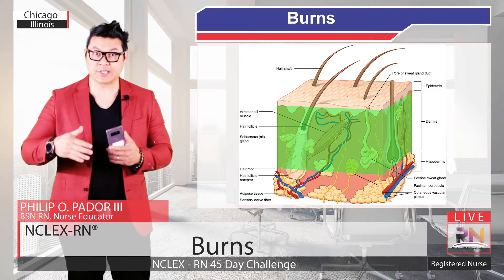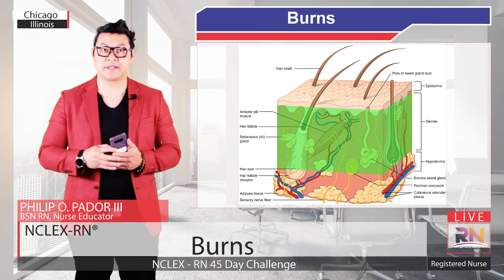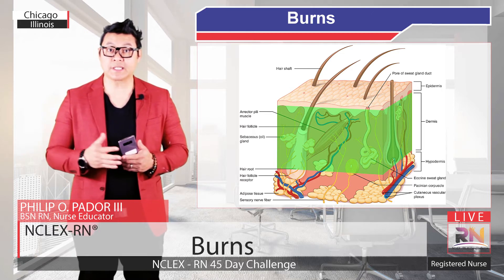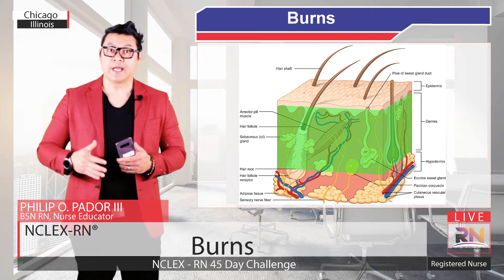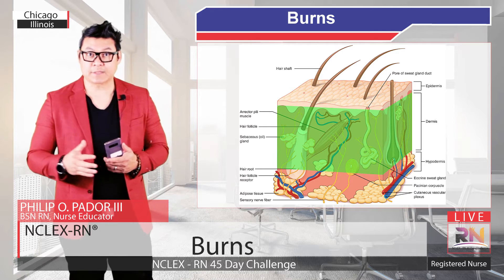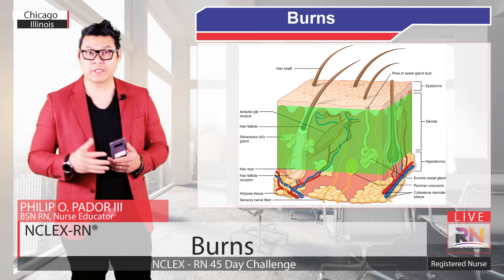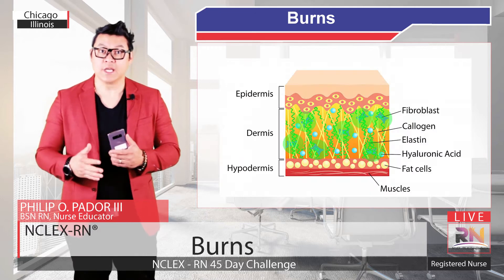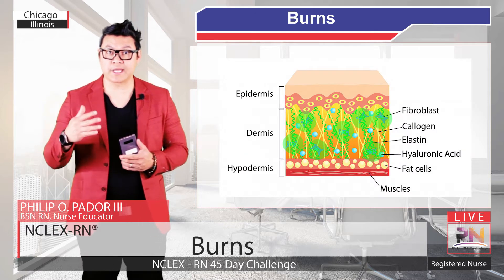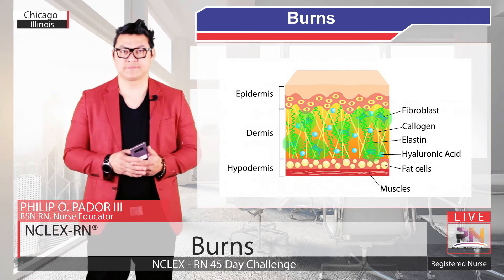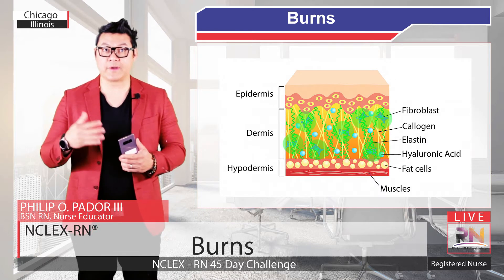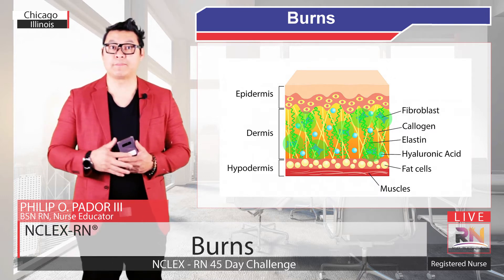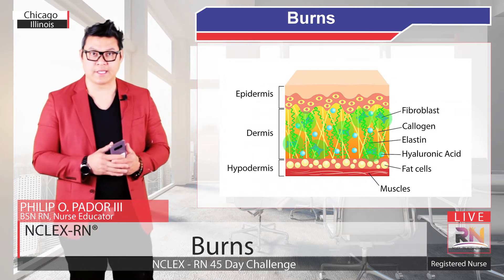Underneath the epidermis is the thicker dermis layer that contains nerves and blood vessels. The dermis is divided into two layers: a thin papillary layer just below the epidermis and a deeper reticular layer. The papillary layer contains fibroblasts, which produce connective tissue proteins called collagens.